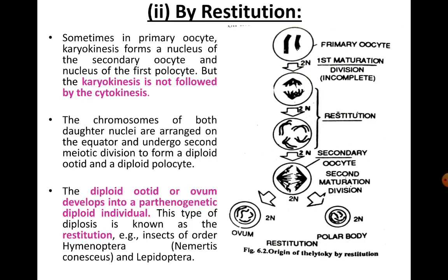In restitution, in a primary oocyte, karyokinesis forms a nucleus of the secondary oocyte and a nucleus of the first polocyte, but karyokinesis is not followed by cytokinesis. The chromosomes of both daughter nuclei are arranged on the equator and undergo a second meiotic division to form a diploid ootid and a diploid polocyte. This diploid ootid develops into a parthenogenetic diploid individual. Restitution occurs in insects of the order Hymenoptera and Lepidoptera.